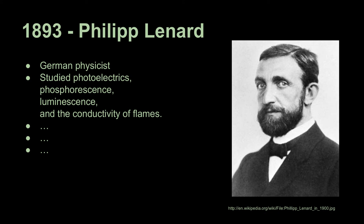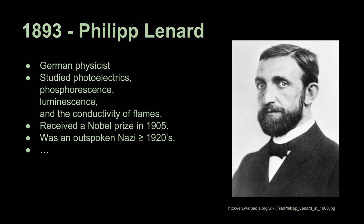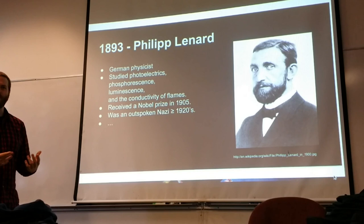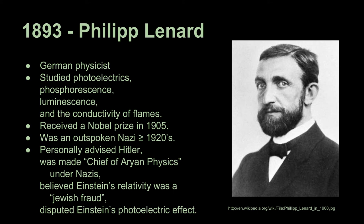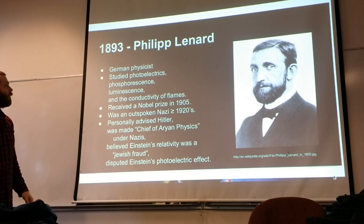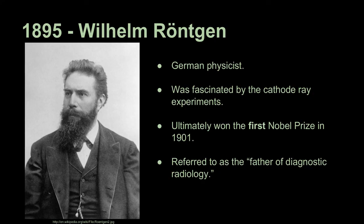He was beat by two years — he just about discovered the important bit here, but didn't quite. He ultimately received a Nobel Prize in 1905 for this work. A little less savory: he was an outspoken Nazi in the 1920s before there was social pressure — arguably one of the instruments of spreading Nazism. He personally advised Hitler, was made the chief of Aryan physics under the Nazis, believed Einstein's relativity was 'Jewish fraud,' and disputed Einstein's photoelectric effect. Judge him on his contributions to science, I would argue.